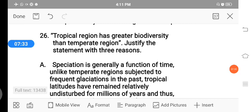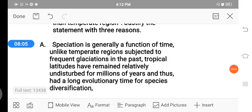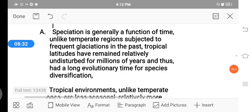Next question is, tropical regions have greater biodiversity than temperate regions. Justify the statement with three reasons. One is speciation. The process of formation of new species is generally a function of time. Unlike temperate regions subjected to frequent glaciation in the past, tropical latitudes have remained relatively undisturbed for millions of years. Thus, had a long evolutionary time for species diversification. Here, the formation of new species, due to frequent glaciation in the past, tropical latitudes have remained relatively undisturbed for millions of years. Due to this, very much species diversification we are going to see.